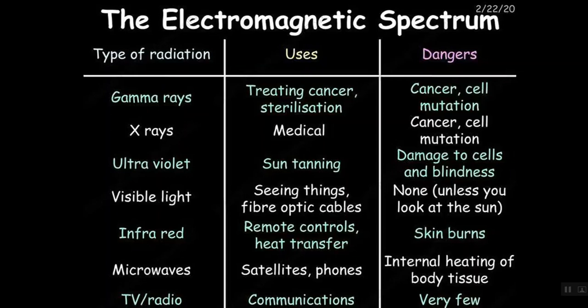Microwaves we use in satellites, phones, we use it for wi-fi, we use it in microwave ovens. The dangers of that is internal heating of body tissue, so think of putting your hand in the microwave, that's exactly what will happen. And then lastly TV and radio waves are used for communications and to our knowledge there are very few problems or dangers. If you have any questions please let me know, we're going to break this down into a few lessons. Thank you and goodbye.